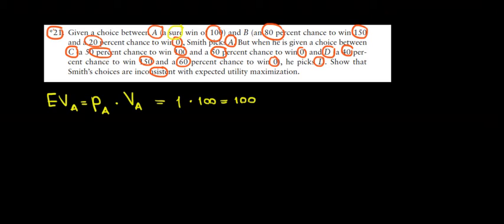What is the expected value of B? Well, the expected value of B is the probability of B times the value of B. So here we have an 80% probability to win 150, so 0.8 times 150, plus a 20% probability, so 0.2, to win zero. So the outcome would be just zero, which gives us an expected value of 120.